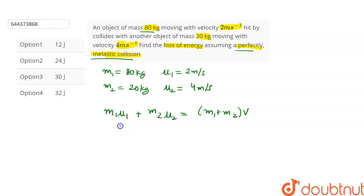Let's substitute the values in this equation. So this will give us m1 is 80 into 2 plus m2 is 20 into u2 is 4 is equal to 80 plus 20 into v. And after simplifying this equation, we get v is equal to 2.4 meters per second.